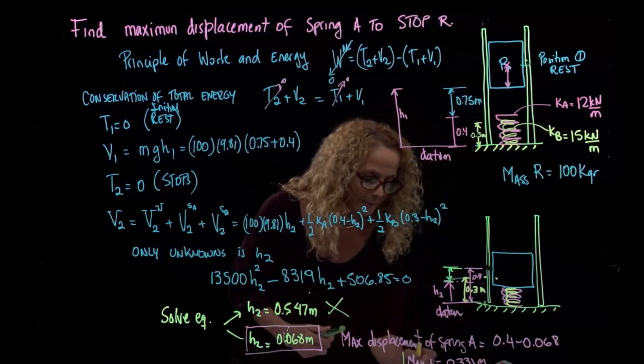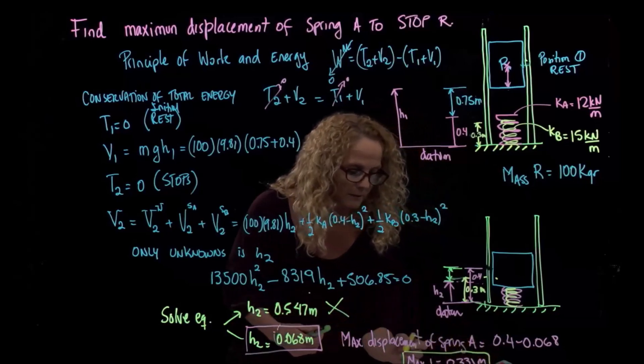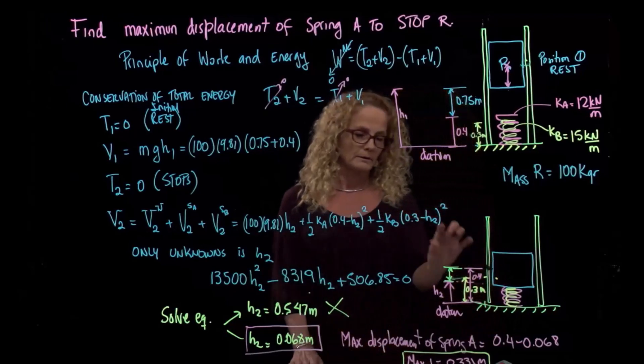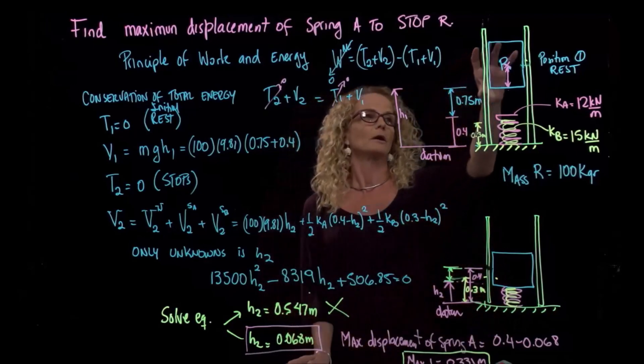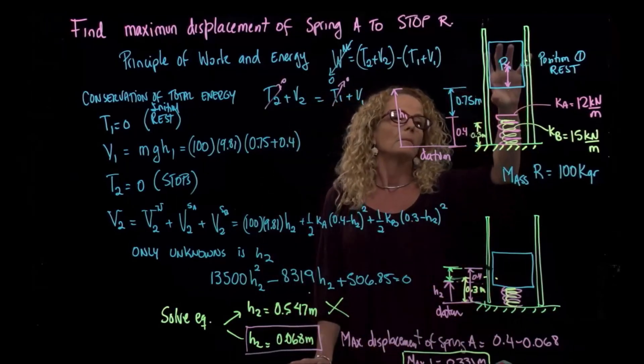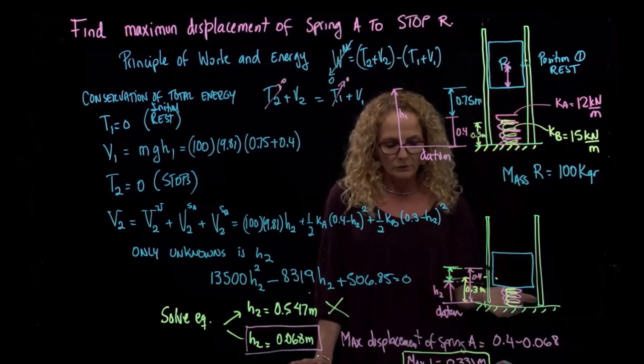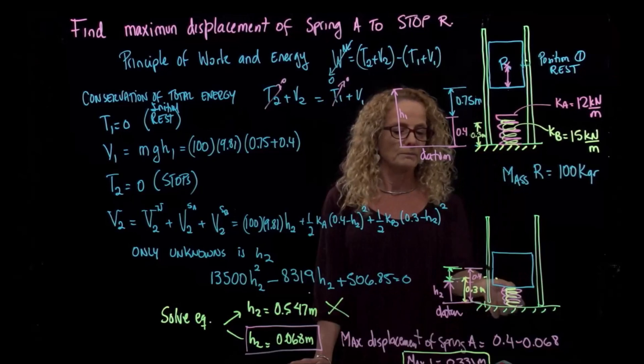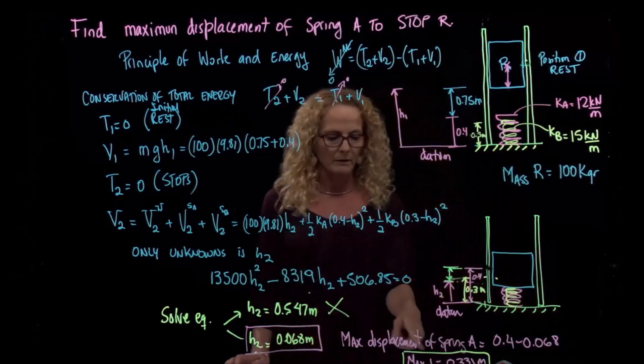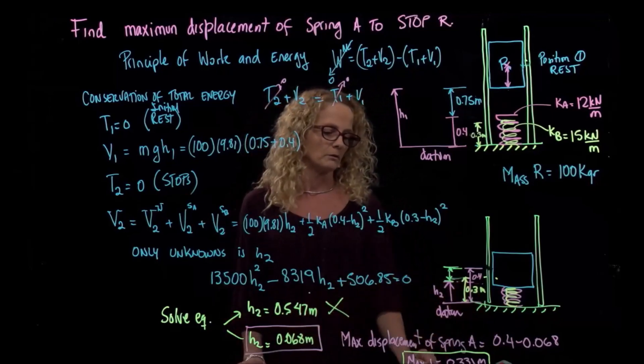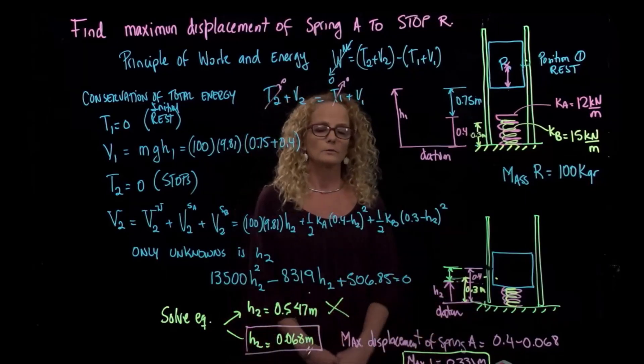If we analyze that result, it means that it almost compressed the spring absolutely. It's very compressed. So the block went very much down in order to compress both springs. We could actually calculate how much spring B was compressed by subtracting 0.3 minus this distance, and it was also very compressed. So this is the solution of this problem.